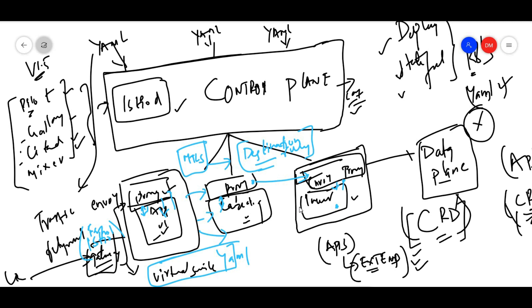This is how Istio works. To set it up, you create an Istio gateway, a virtual service, and destination rules. The sidecar container proxy is already injected automatically into your pods by Istio.